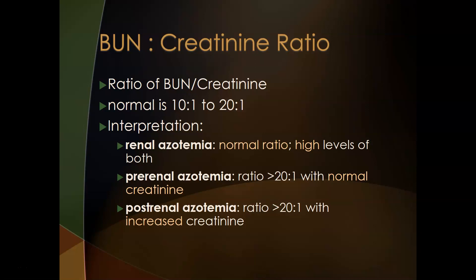For creatinine clearance, greater than 125 mL/min per day is considered normal. Lower numbers for GFR are not good; higher numbers are normal. The BUN to creatinine ratio is often reported on panels when both tests are ordered. A normal BUN to creatinine ratio is anywhere from 10:1 to 20:1.